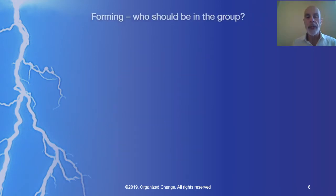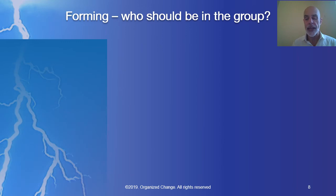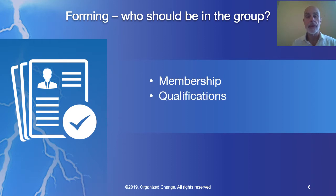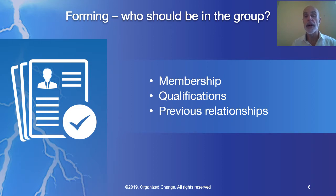Forming, the first step, answers the question: who should be part of the group? This specifically involves membership, what qualifications are necessary to be in the group, and what previous relationships have existed among group members.